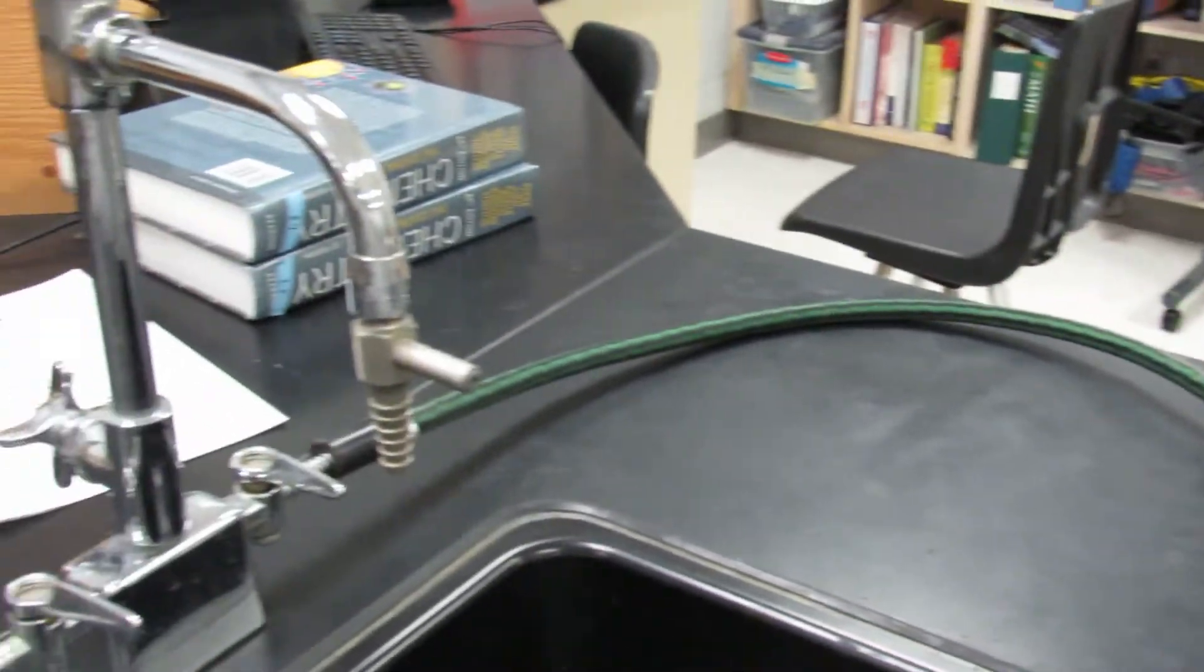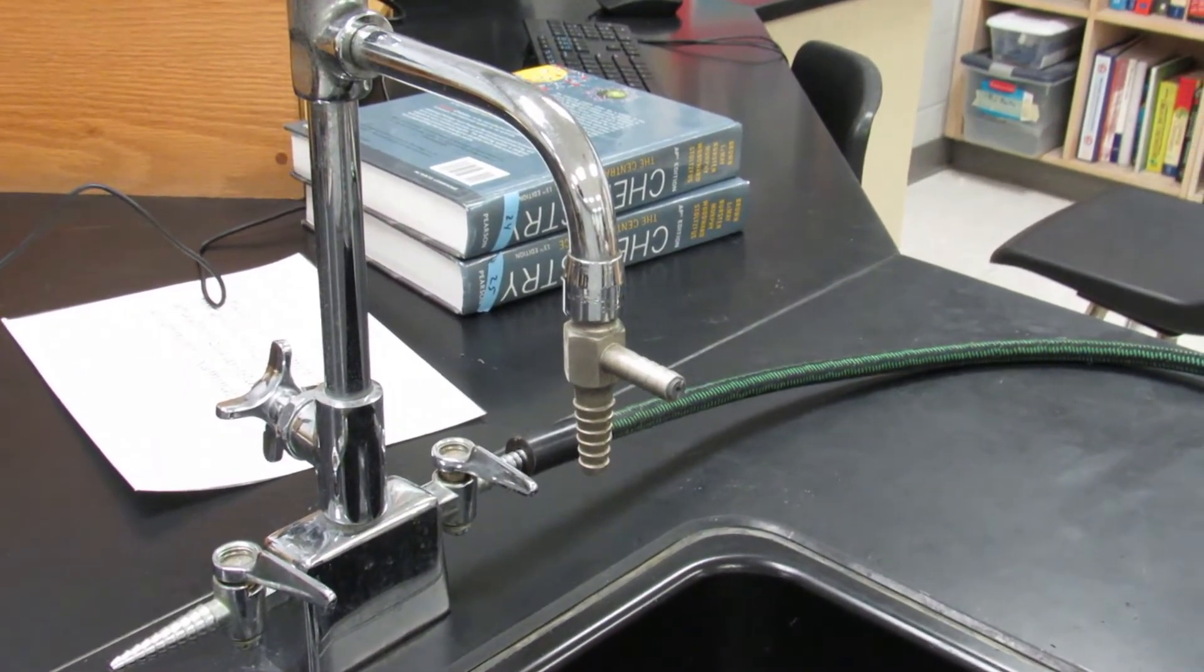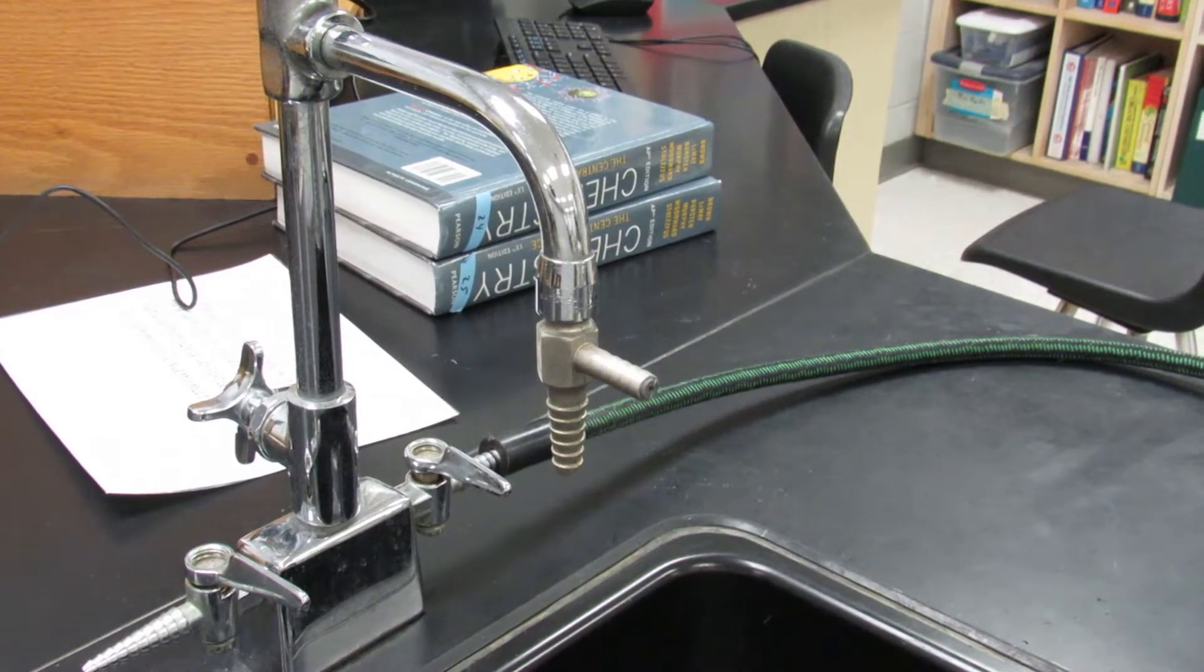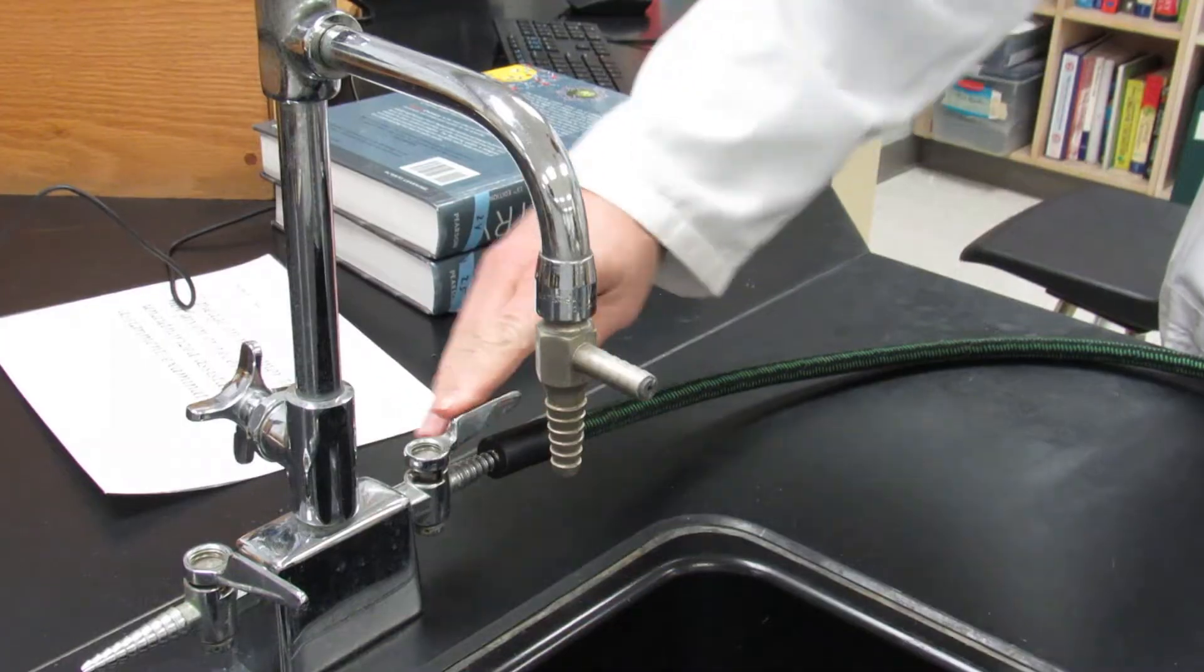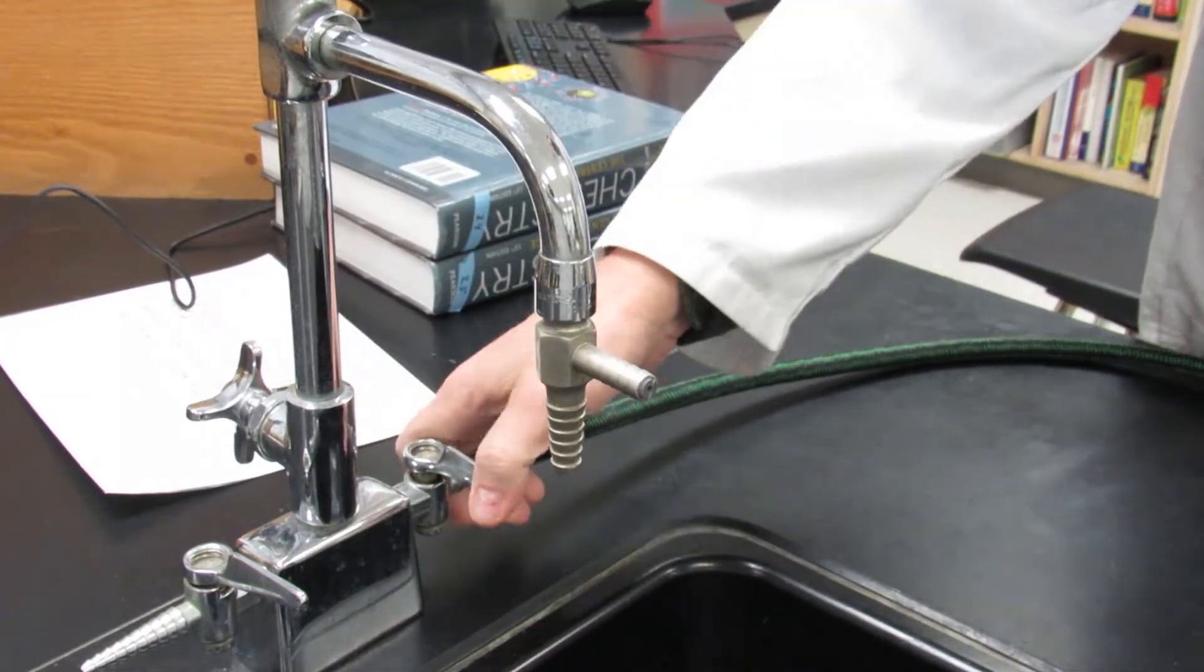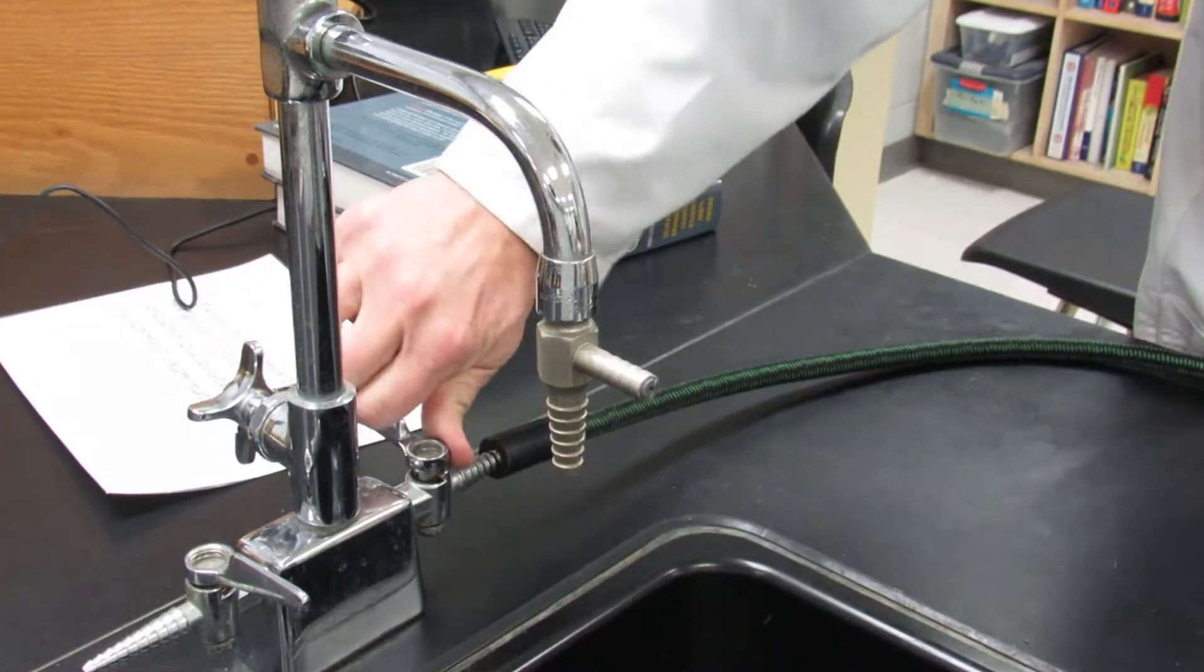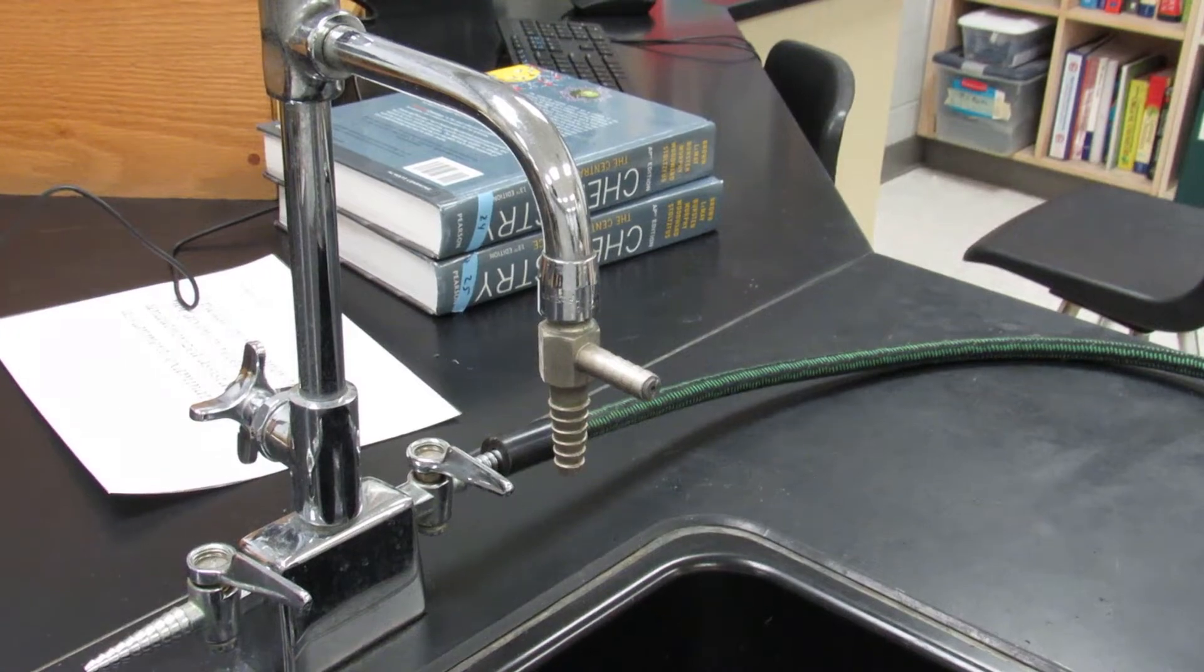The other end of the Bunsen burner is attached to a gas jet next to the sink. The valve that controls the gas is perpendicular to the gas jet when it's off, but when it's parallel, it's on.